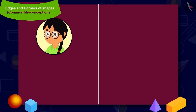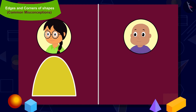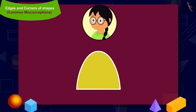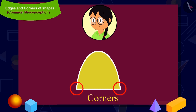Let us see which shapes Minu and Bablu have made. This is Minu's shape. Children, can you say how many edges are there in Minu's shape? Two edges. Minu's shape has one curved edge and one straight edge. Can you look for corners in Minu's shape? These are the corners in Minu's shape. How many corners are there in total? Two. So children, is Minu's shape correct? No, because her shape has two corners.